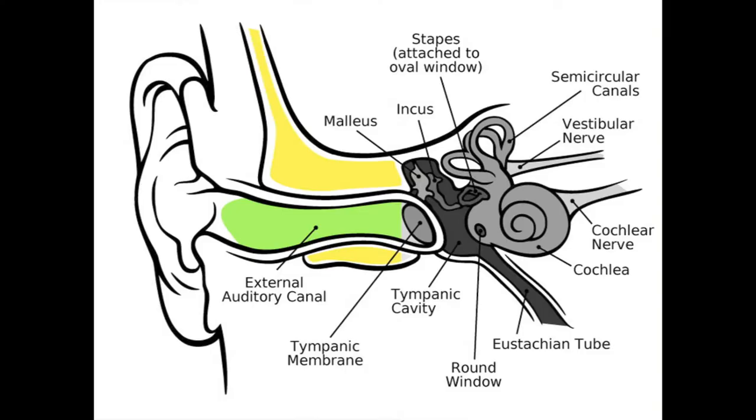Today we're going to do an examination of your ears, nose, and throat, and head and neck area. We'll start with your ears. The ear has three components: the external ear, the middle ear, and the inner ear.